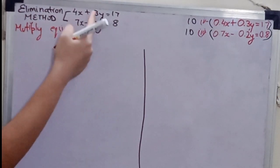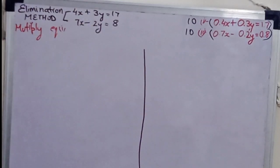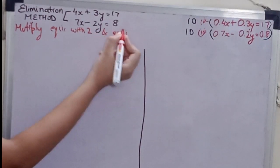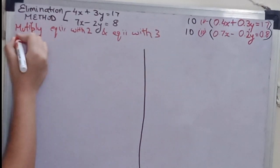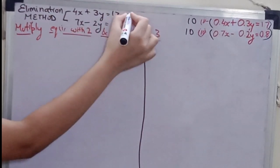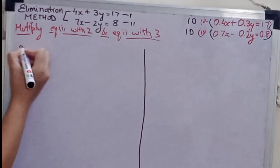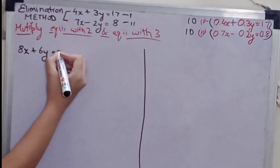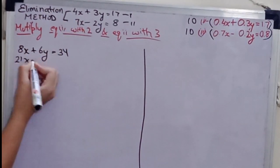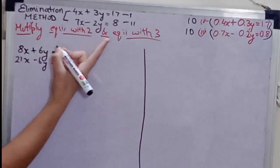Multiply equation 1 with 2 and equation 2 with 3. So now what my equations are: 2 times gives 8X plus 6Y equals to 34, and 3 times gives 21X minus 6Y equals to 24. So this is how it looks like.